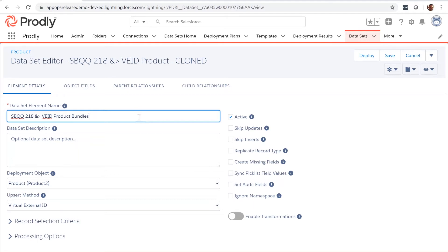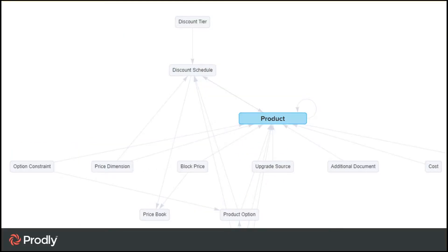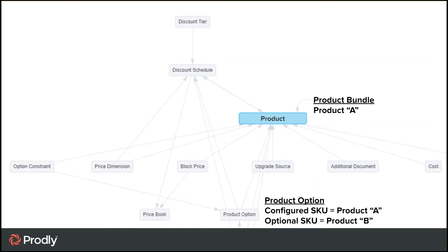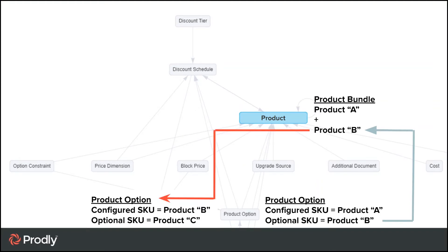To view the relationships in this dataset, click the Display As icon and select the Diagram view. Let's say that you have made updates to the options associated with product A. For option A, we can see that product A is the configured SKU and product B is the optional SKU. If product B has its own options where it's a configured SKU and lists other products as optional, those optional products will also be deployed. If you do not want that to happen, then you will need to make some modifications. This is one of many examples where a circular relationship may bring in reference data from outside the parent bundle.